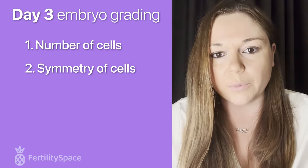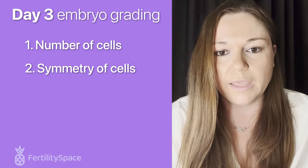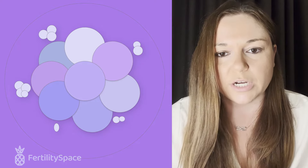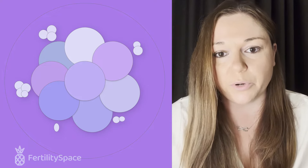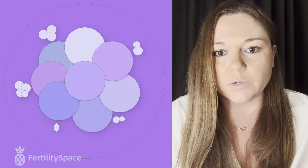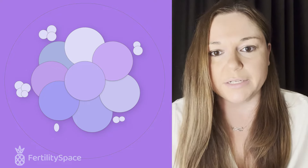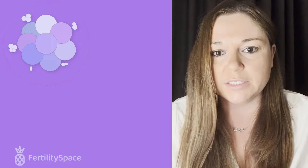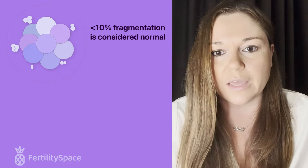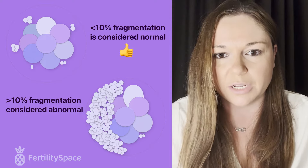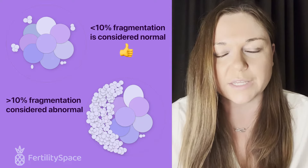The final criteria for day three grading is fragmentation. Fragmentation occurs whenever a cell tries to divide but instead breaks into little pieces. We grade fragmentation on a percent. If there is a small amount — less than 10% — it's considered normal. However, if there's more than 10% fragmentation in the embryo, that's considered abnormal.